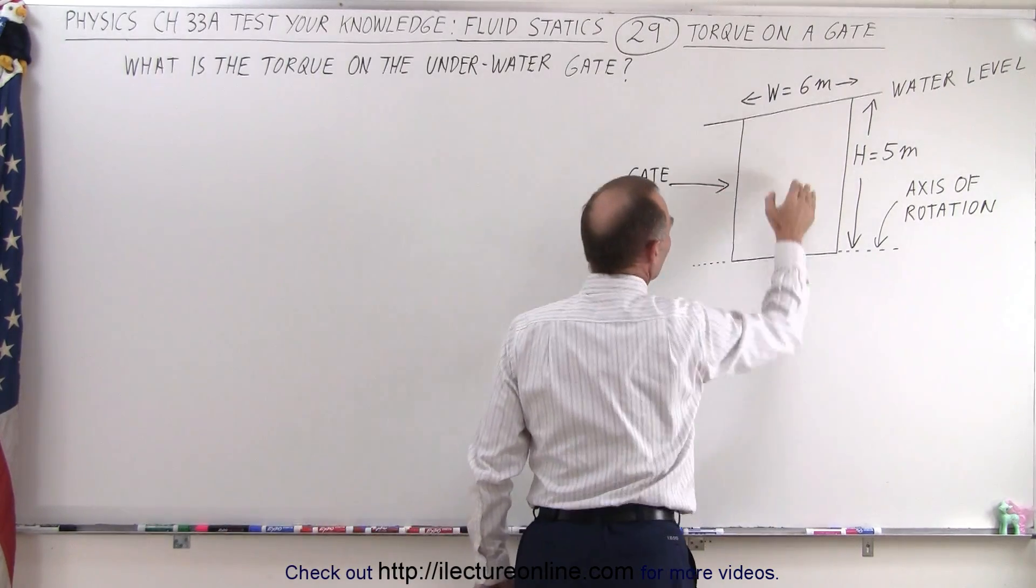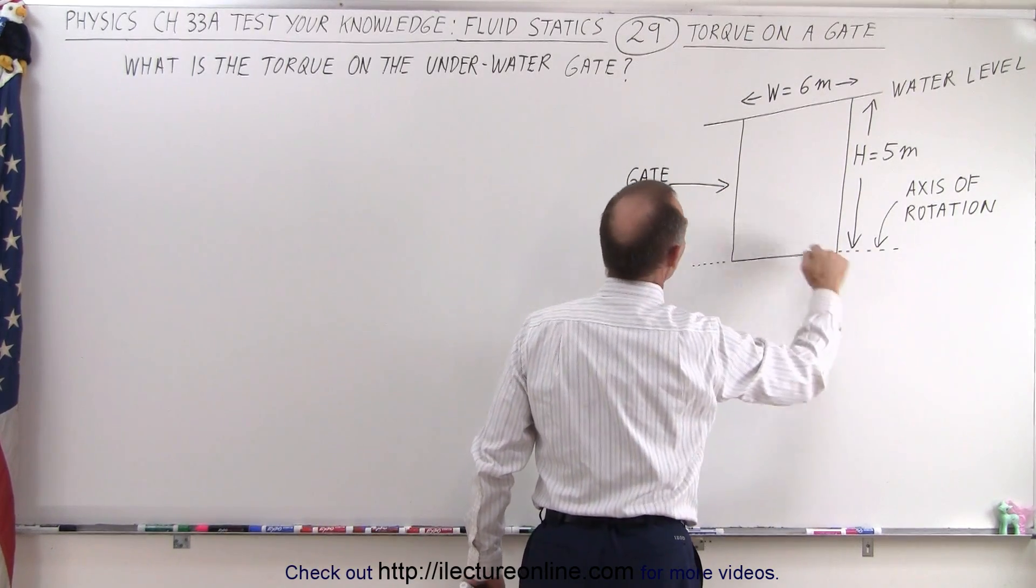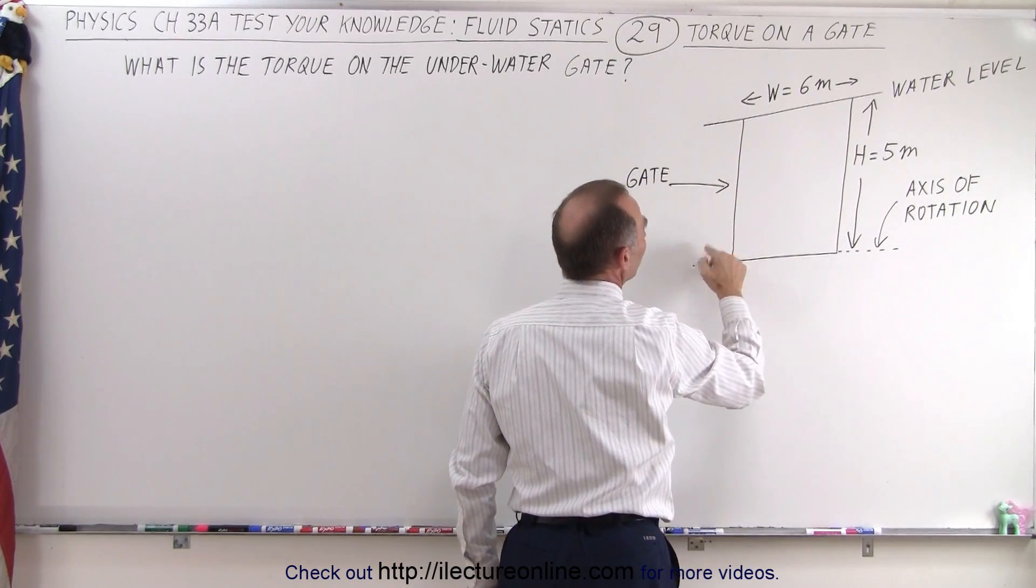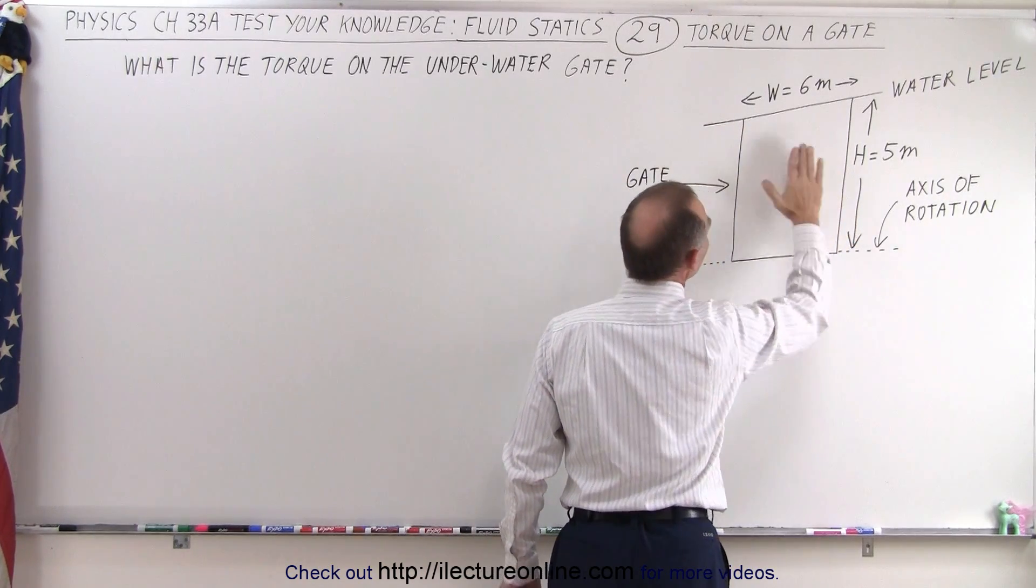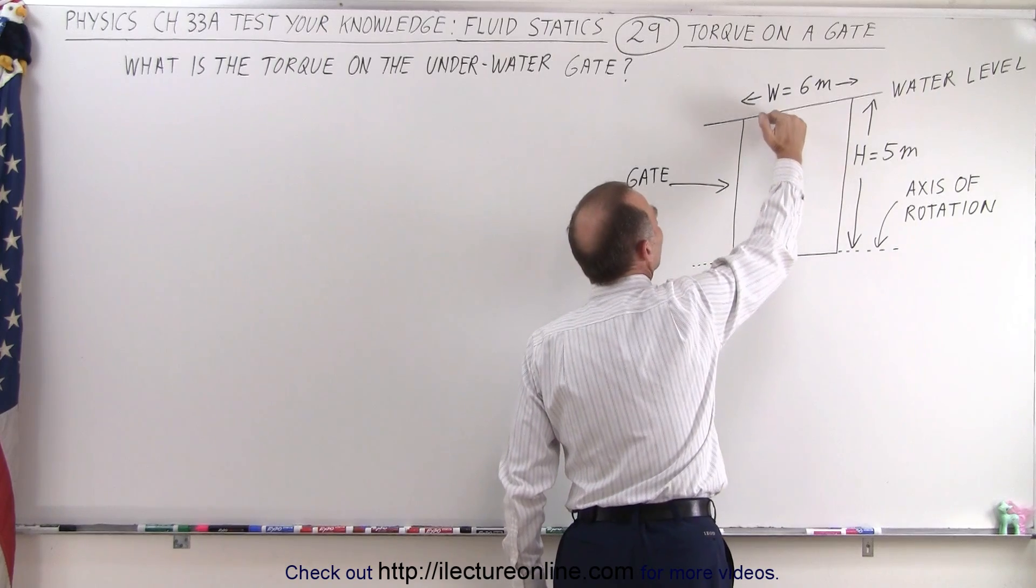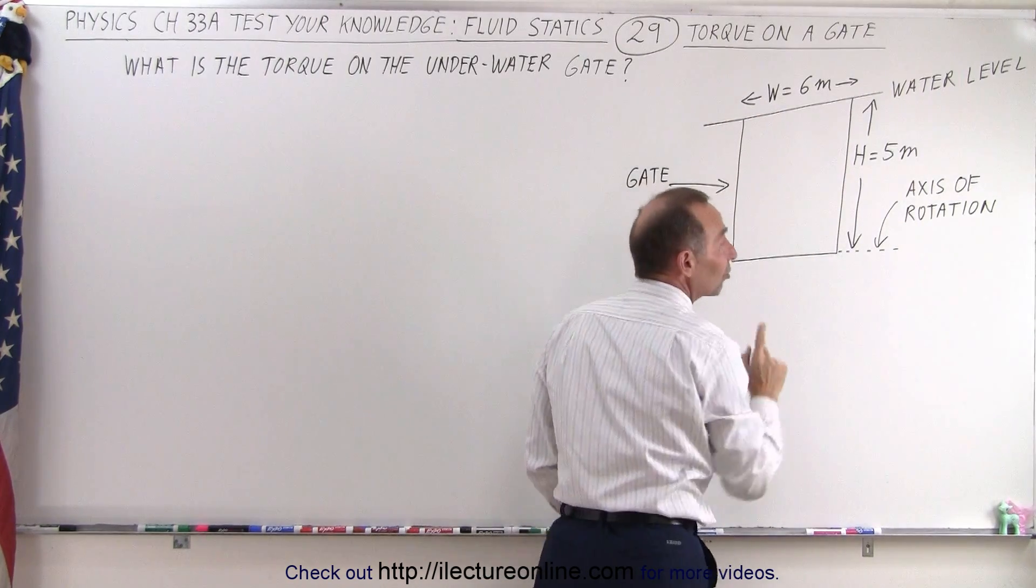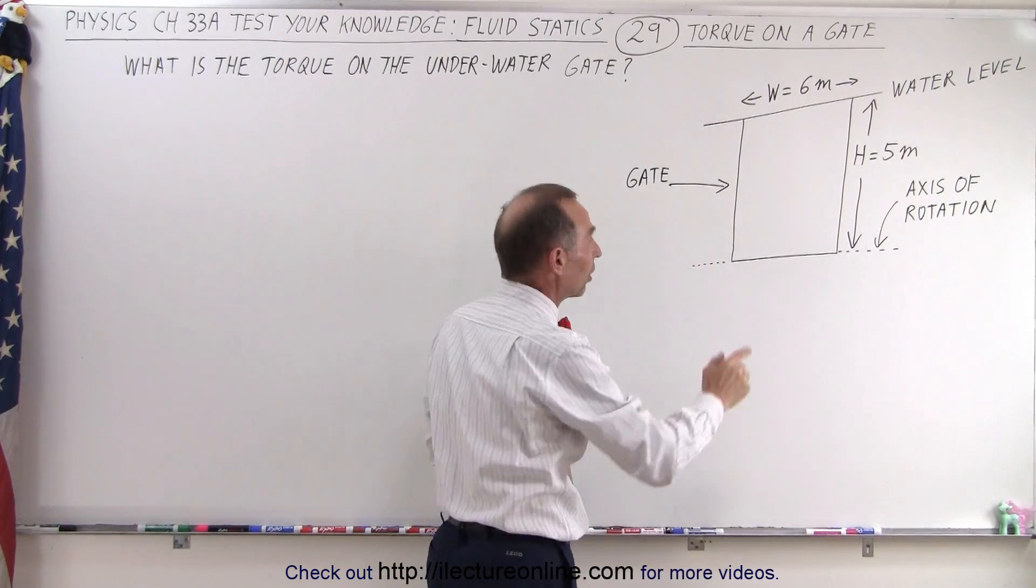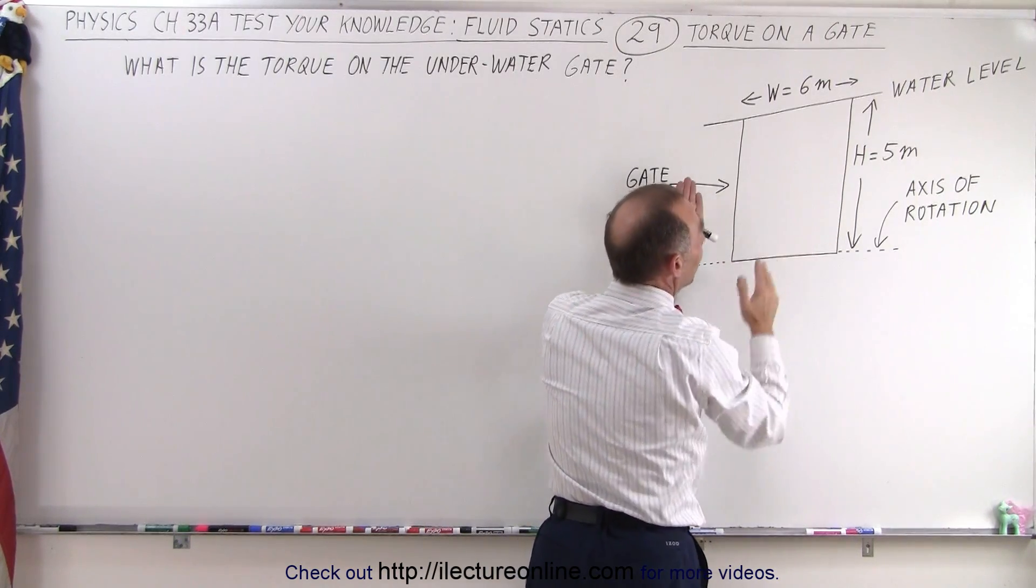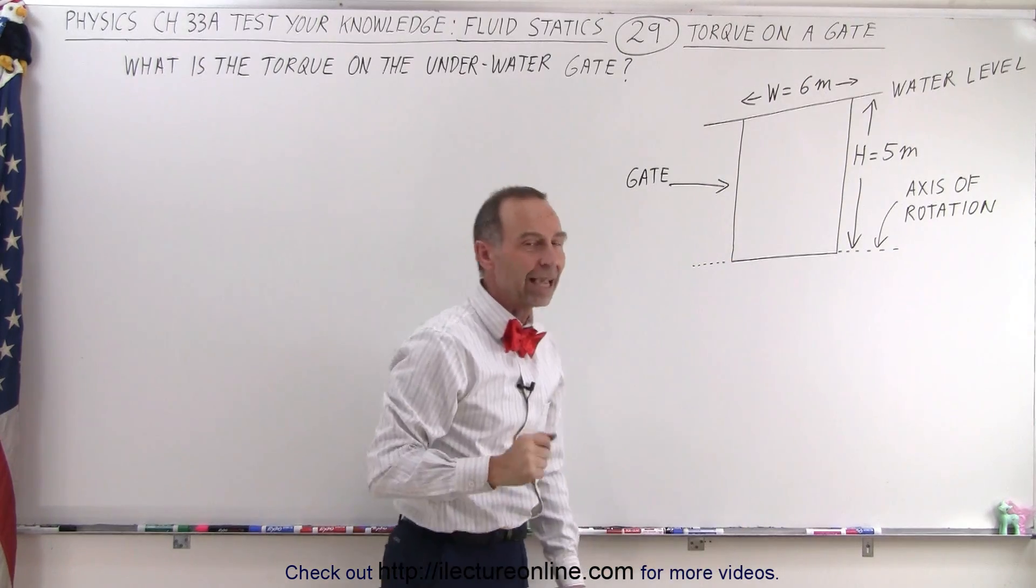Here we have a gate. It is hinged at the very bottom which is a distance of five meters below the surface. The gate is six meters wide and the water reaches all the way to the very top of the gate so that the gate can open like this and the question is what is the torque on this gate with the water on the other side of the gate pushing against the gate.